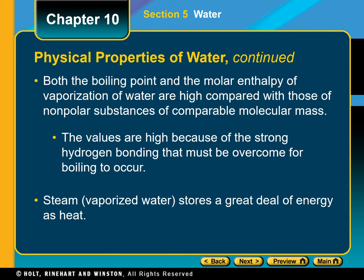Plants also use water to transport nutrients through their vascular systems. Finally, water itself participates in many biochemical reactions. Along with carbon dioxide from the air, water is an essential reactant of photosynthesis, the process by which plants convert energy from the sun into chemical energy that organisms can use. Water also participates in reactions that assemble molecules for energy storage and disassemble them when they are needed for fuel in cell processes.